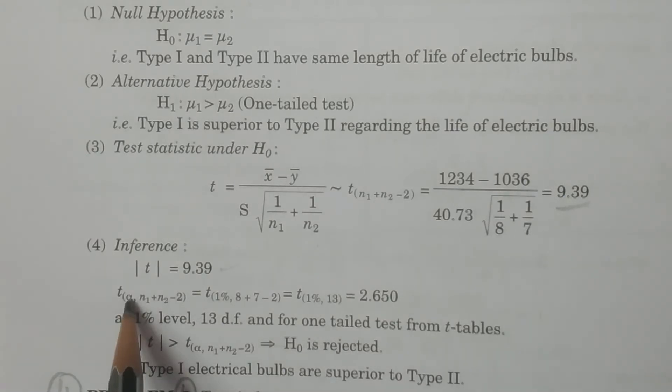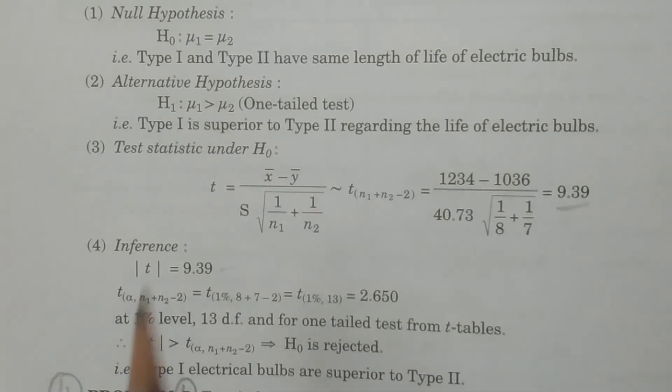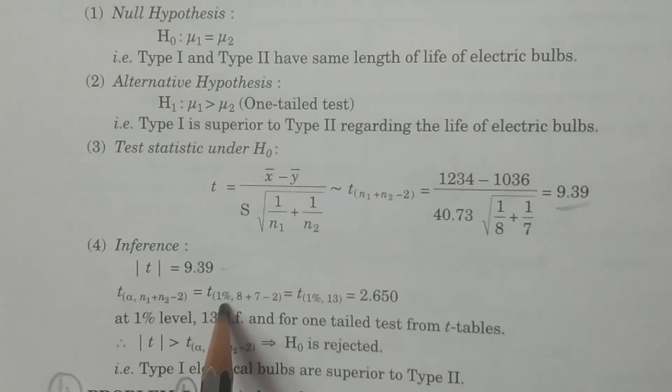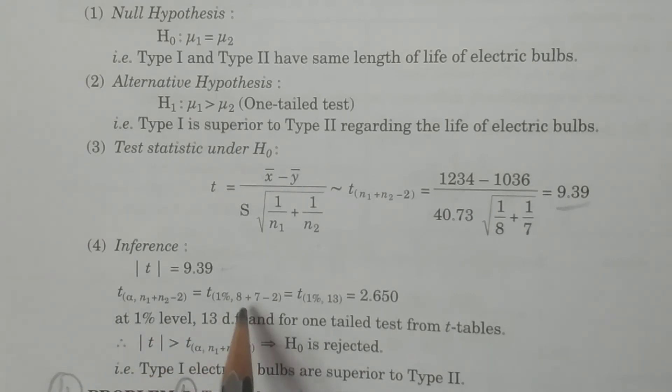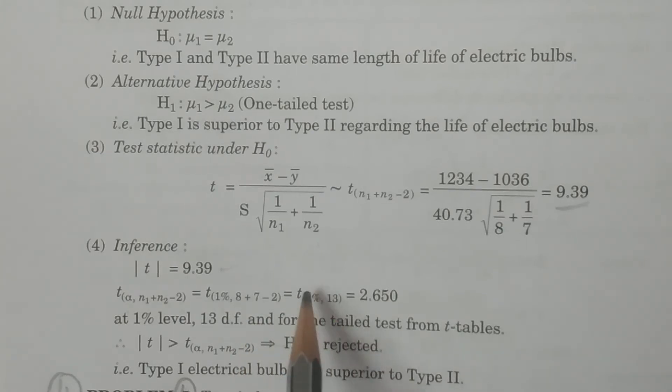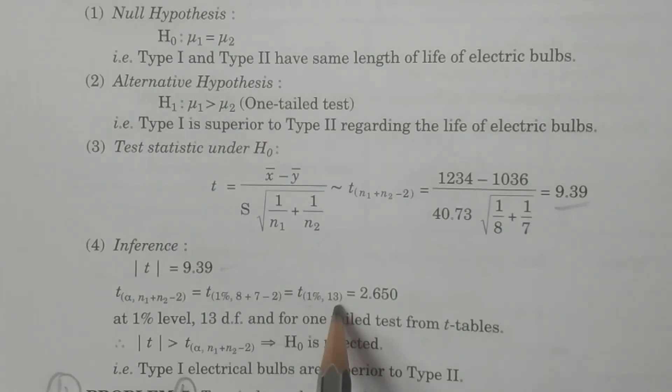And then t(α, n1 + n2 - 2), and which tailed test it is. Alpha is level of significance, specified in the problem as 1 percent. Therefore, we consider 1 percent. n1 + n2 - 2, 8 + 7 - 2 is 13. So t(1%, 13 degrees of freedom).